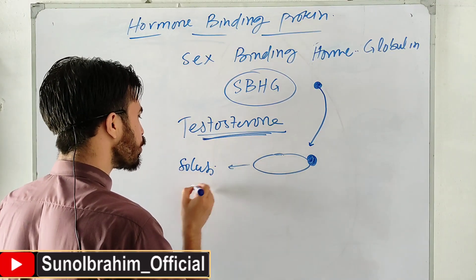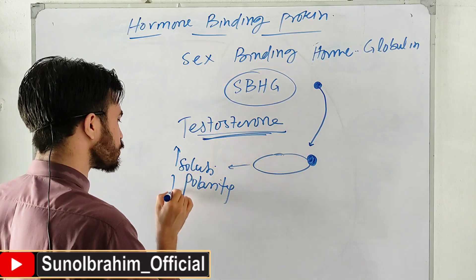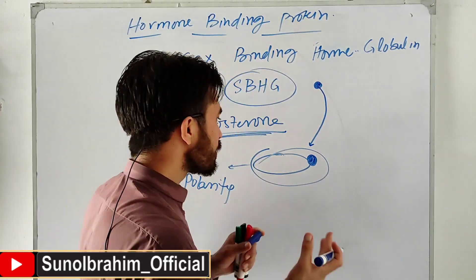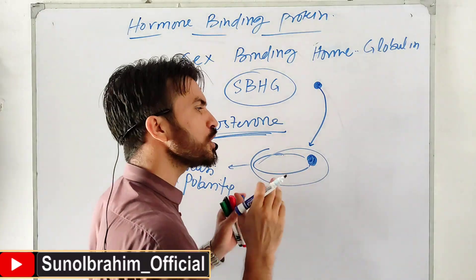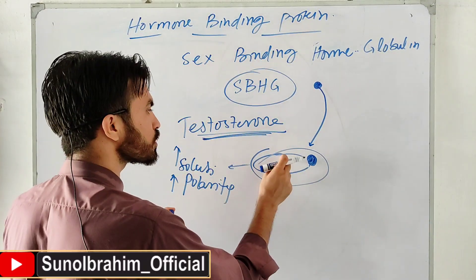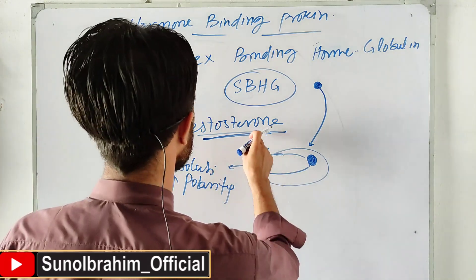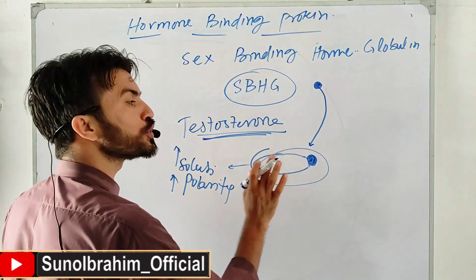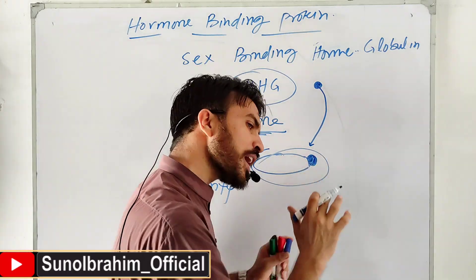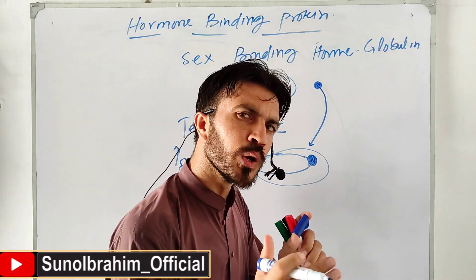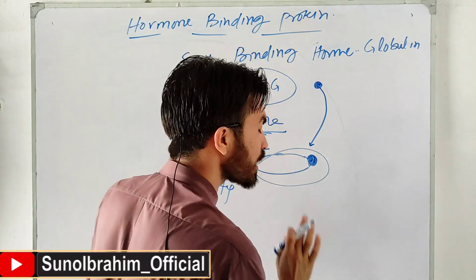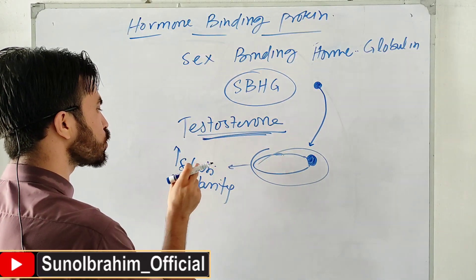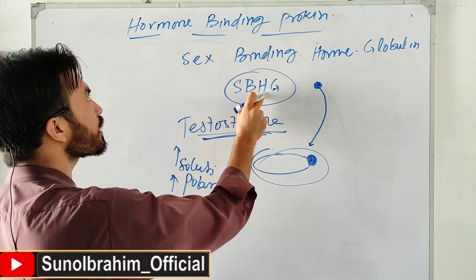Solubility and polarity increase when SHBG binds testosterone, allowing it to travel in blood. This complex acts as a reservoir of testosterone - a storage system. When testosterone is needed, the protein releases it and testosterone becomes active. When inactive, it is stored in this reservoir - kept soluble and polar in the bloodstream via the protein.